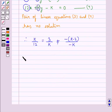Or, you can say we have k upon 12 is equal to 3 upon k is not equal to k minus 2 upon k. Now, considering this, we have k upon 12 is equal to 3 upon k.